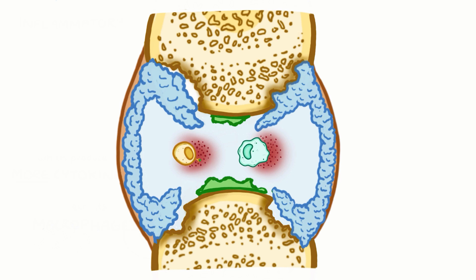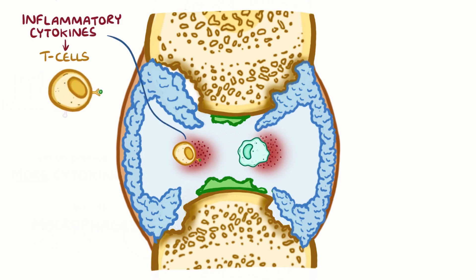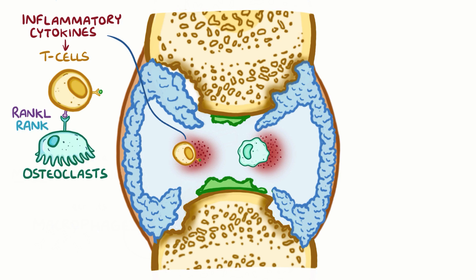In addition, inflammatory cytokines increase a protein on the surface of T cells known as RANK-L, or receptor activator of nuclear factor kappa B ligand. RANK-L allows T cells to bind RANK, a protein on the surface of osteoclasts, to get them to start breaking down bone.